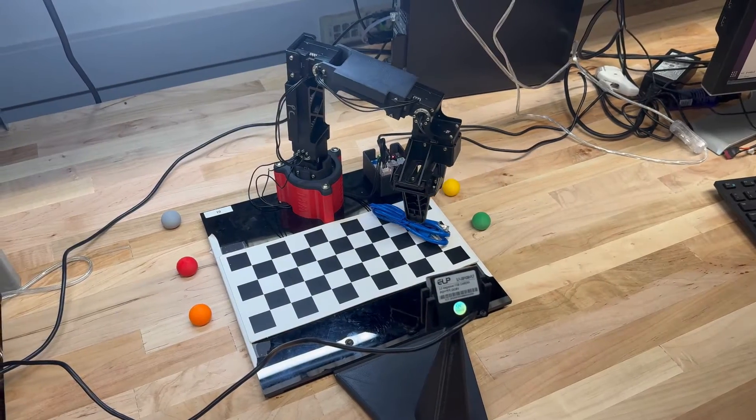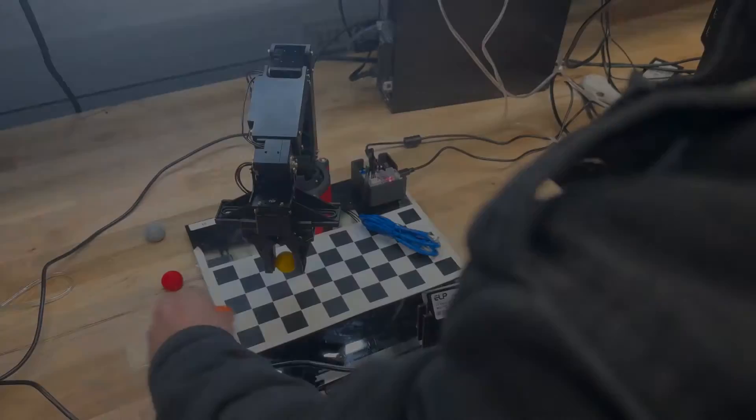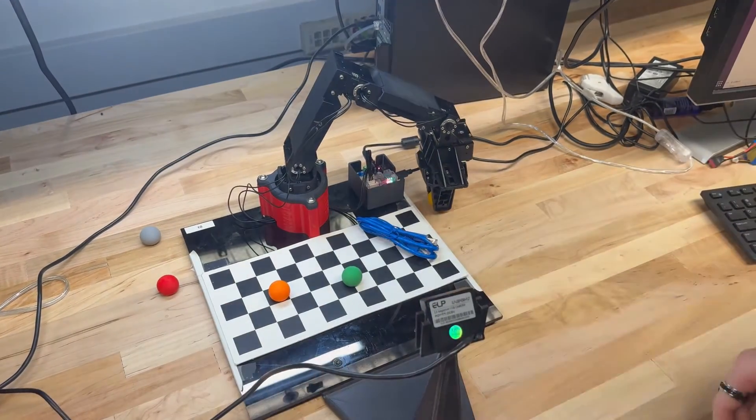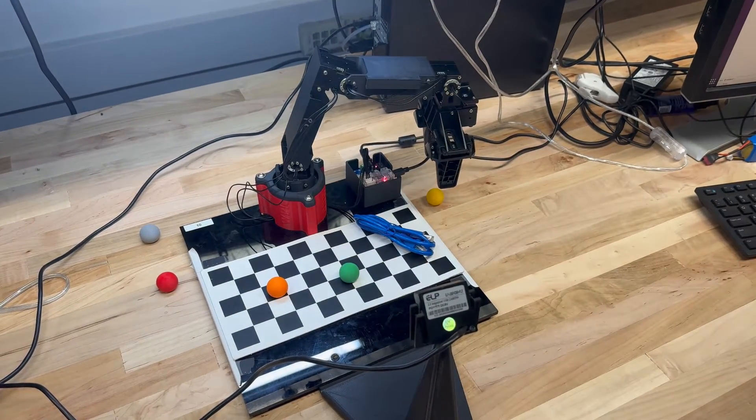The arm can also recognize when an object is in the workspace that does not belong and move it to a designated location. We also implemented safety measures to make sure the robotic arm would not move into the workspace while an operator was moving objects or setting up the environment.